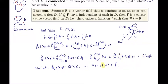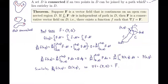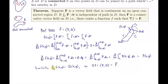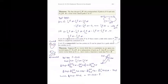Running a similar argument for a tiny vertical line below the point (x,y), we find that the partial of f with respect to y equals Q(x,y). Together we have both components, showing that the gradient of little f equals capital F — the vector field. This proves that if a vector field is continuous on an open connected region D and path independent on D, then it is conservative.